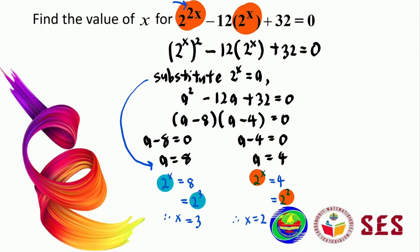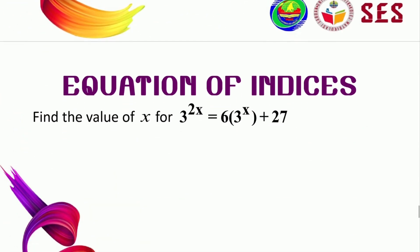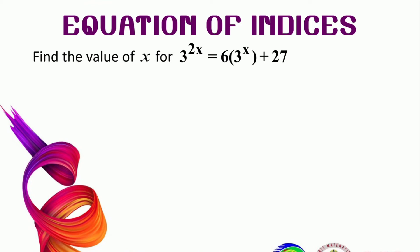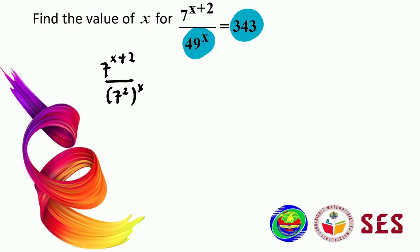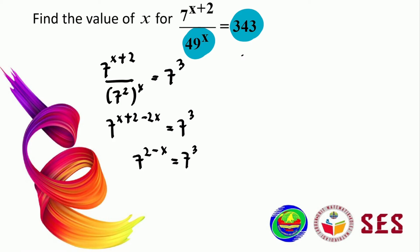Now let's test you — pause this video and try the two practice questions. When you're finished, continue the video to check your answers. For the first question, we change 49 and 343 into base 7 and rewrite the equation. We get 7 to the power of x plus 2, divided by 7 to the power of 2x, equals 7 to the power of 3. Simplifying the left side gives 7 to the power of x plus 2 minus 2x, which becomes 7 to the power of 2 minus x equals 7 to the power of 3. Comparing powers: 2 minus x equals 3, so minus x equals 1, and therefore x equals minus 1.